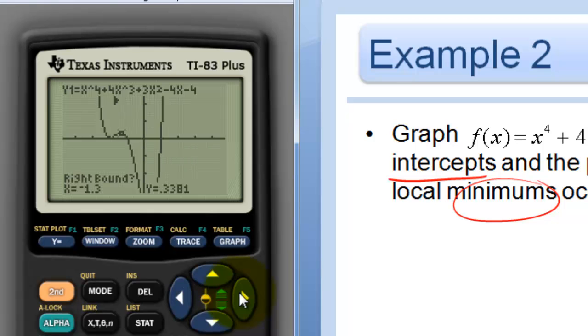And then go to the point again, right bound, maybe press the right arrow twice. And then guess, just go right in the middle. And so my maximum is, go ahead and write this down, negative 1.366, 0.348.